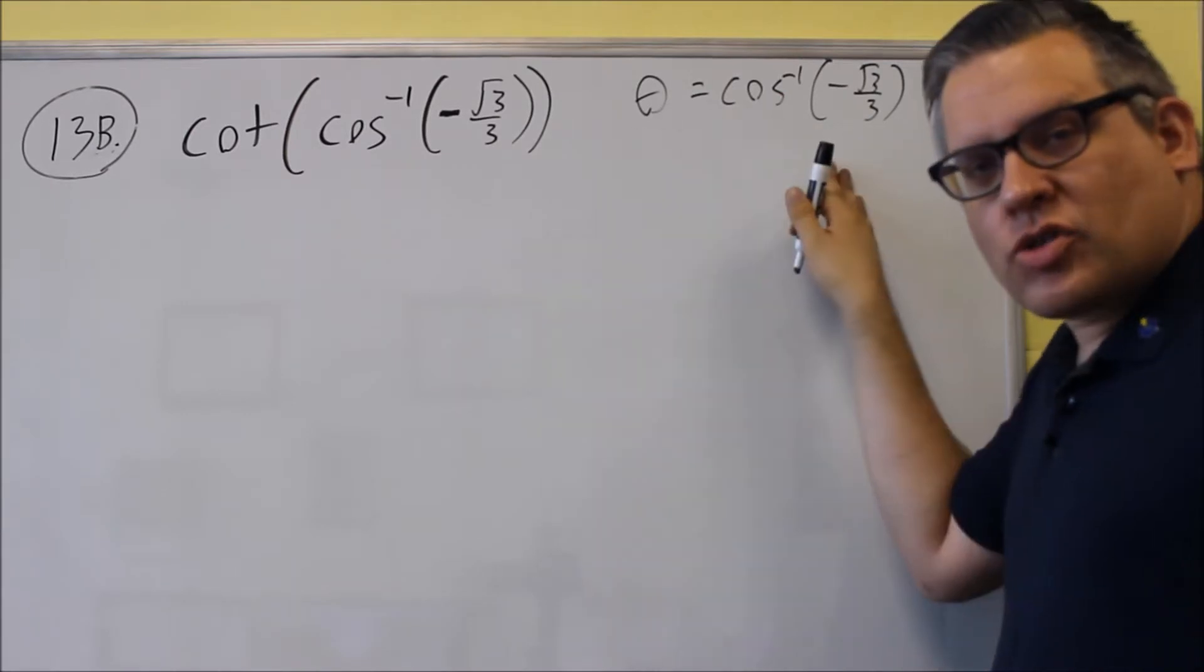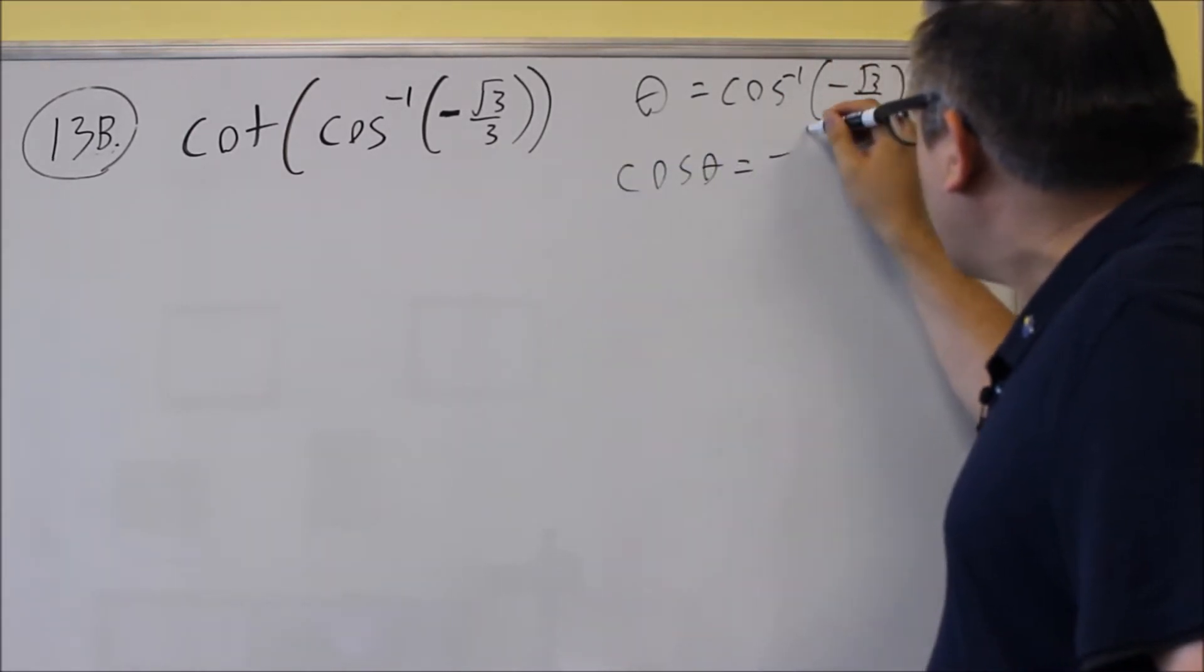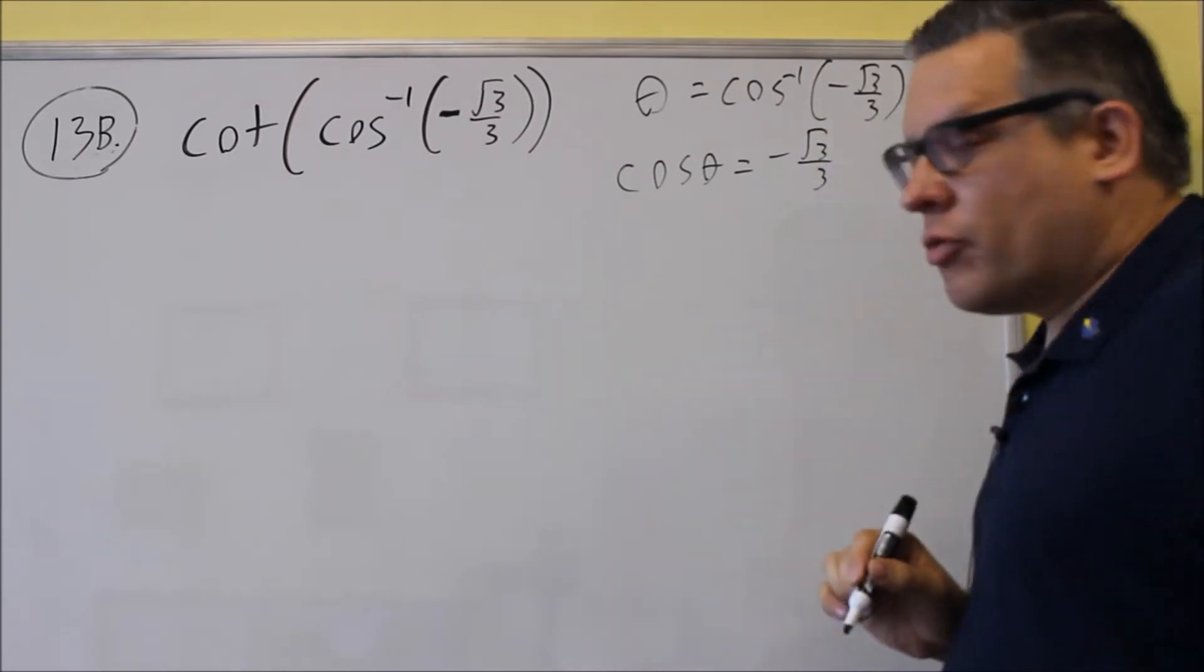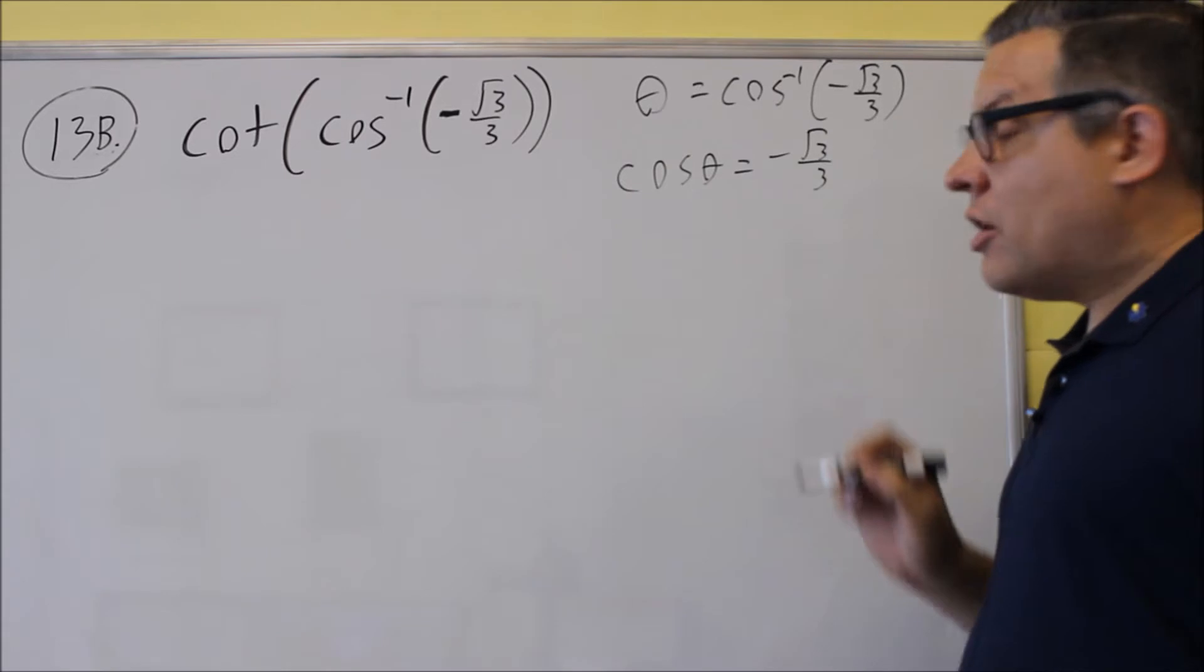If we apply a cosine of both sides, we get cosine theta is equal to negative square root of 3 over 3. This tells us cosine, and we want to draw that one.